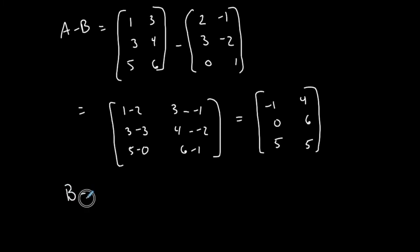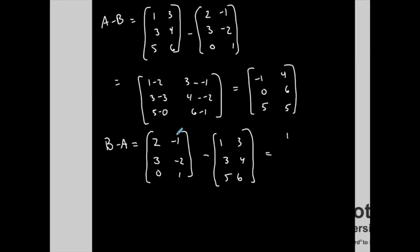I want to show you that if I do B minus A, so 2, negative 1, 3, negative 2, 0, and 1, minus 1, 3, 3, 4, 5, 6. I'm expecting a different result, and let me show you. So 2 minus 1 is 1, negative 1 minus 3 is negative 4, 3 minus 3 is 0, negative 2 minus 4 is negative 6, 0 minus 5 is negative 5, 1 minus 6 is negative 5.